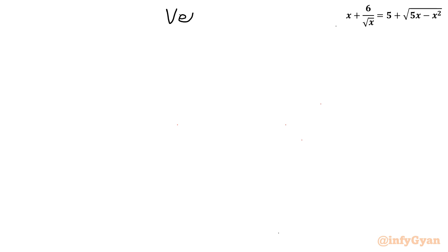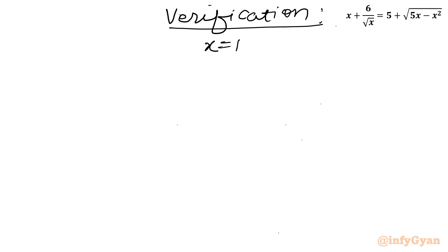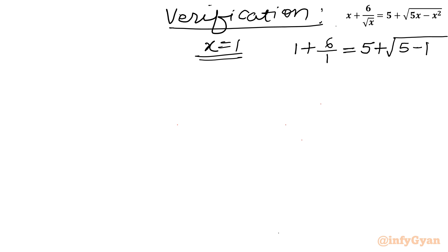Let's cross-examine. Verification for x = 1: LHS = (1 + 6)/√1 = 7. RHS = 5 + √(5·1 − 1²) = 5 + √4 = 5 + 2 = 7. So 7 = 7. Verified.